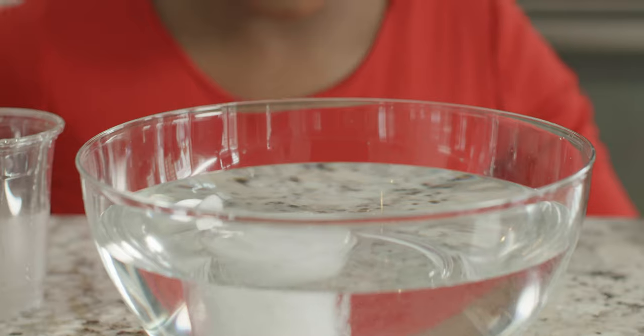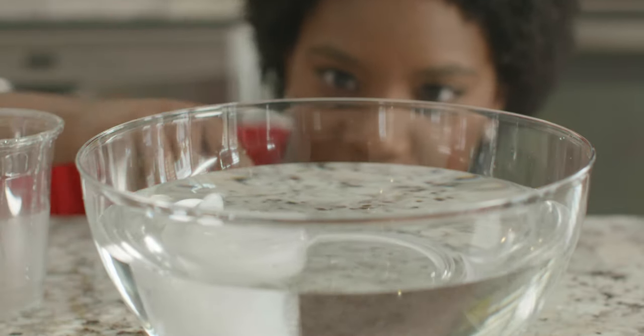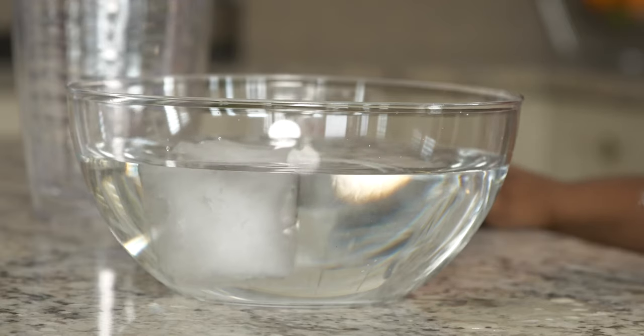If we get down and look at the bowl at eye level, we can see just how much of the ice is floating above the water and how much is below. What do you see?